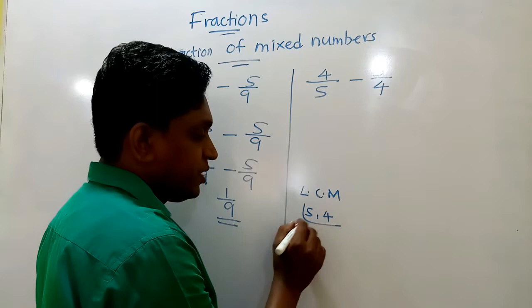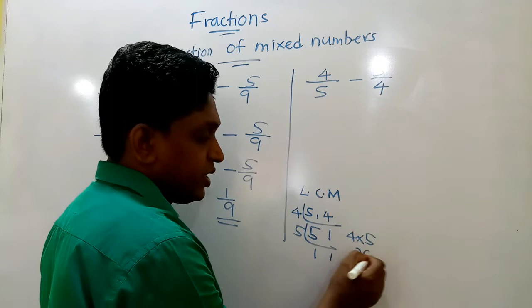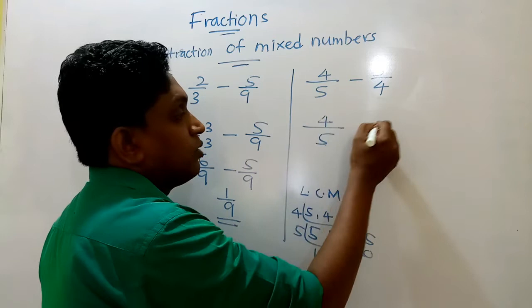LCM of 5 and 4. Here we can try by 4 first. 5 is not divisible and here 1. Then by 5 means 1, 1. So 4 into 5 is LCM. So it is 20.